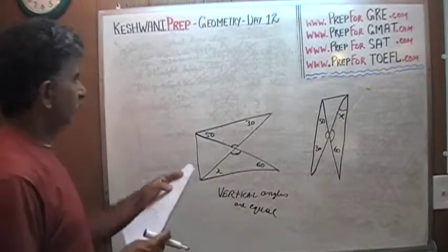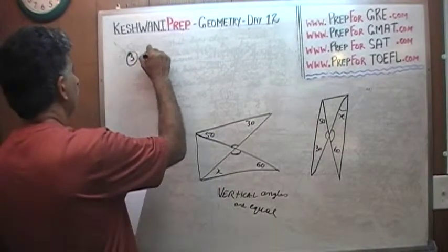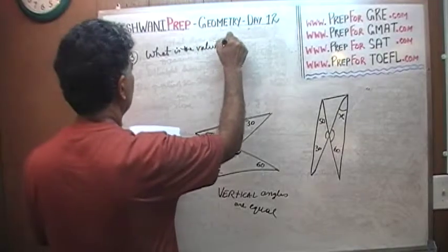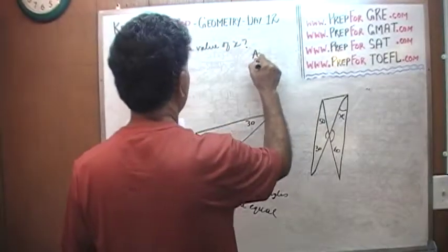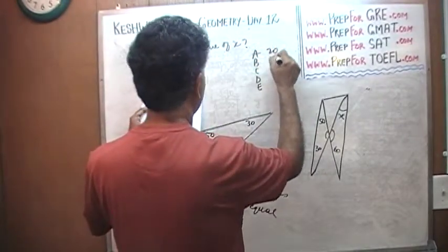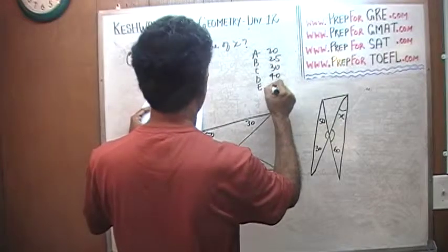So that is the first thing you have to understand. Vertical angles are equal. I have not given you answer choices yet. This was a problem number 3. Question is, what is the value of x? And the answer choices that are given to us are 20, 25, 30, 40, and 45.